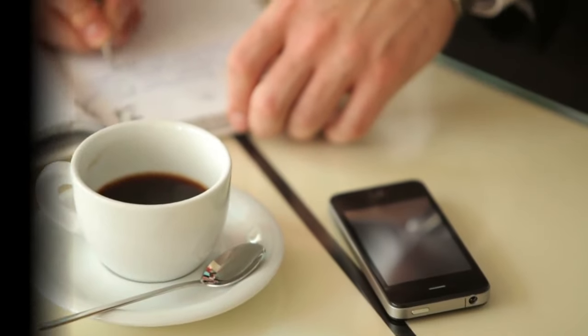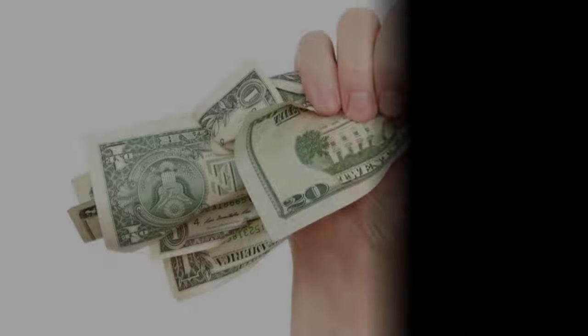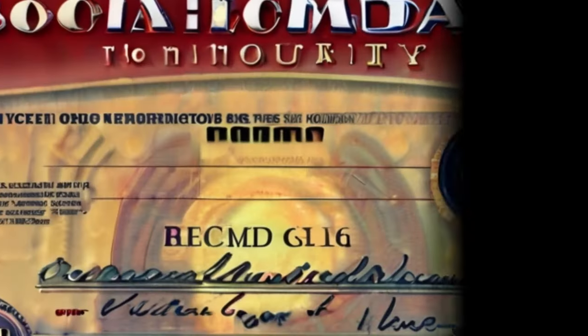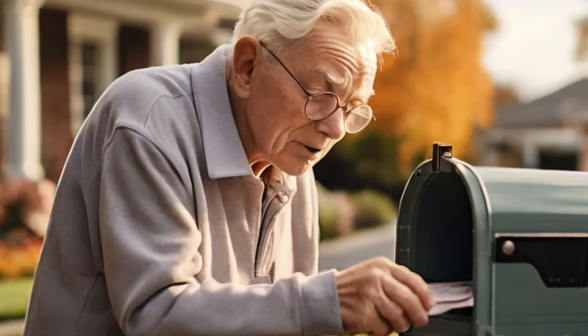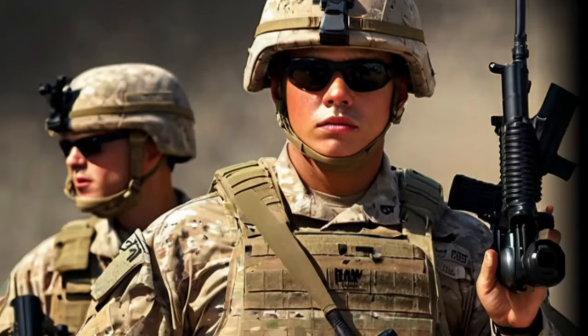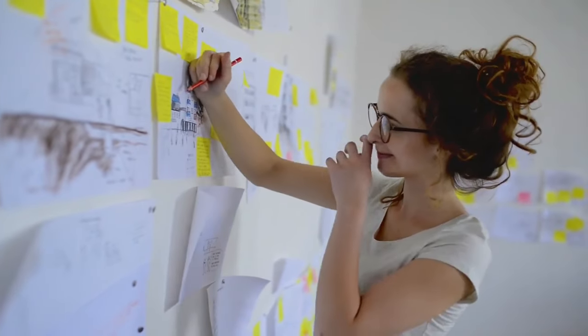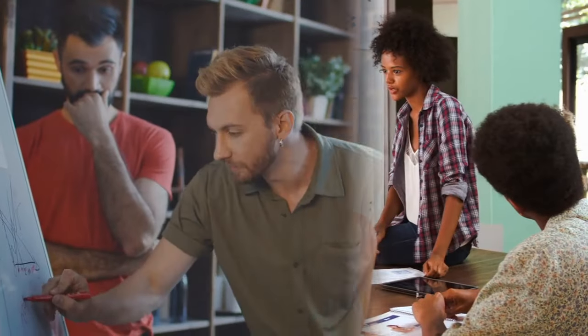The eligibility criteria for receiving the $2,000 stimulus checks are centered around individuals currently receiving benefits from Social Security, SSI, SSDI, or VA. This encompasses a wide range of recipients, including retirees, disabled individuals, and veterans who have served their country. The inclusivity of these programs reflects the government's commitment to supporting those most in need during these challenging times.